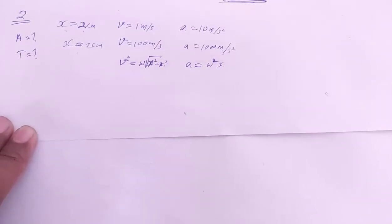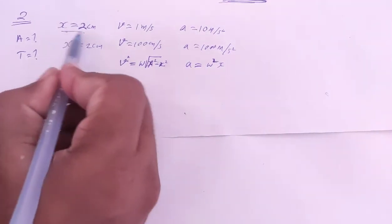Solution to Chapter 12, Simple Harmonic Motion, Question Number 2. The position, velocity, and acceleration of a particle executing simple harmonic motion are found to have magnitudes 2 centimeters, 1 meter per second, and 10 meters per second squared at a certain instant. Find the amplitude and time period of the motion.